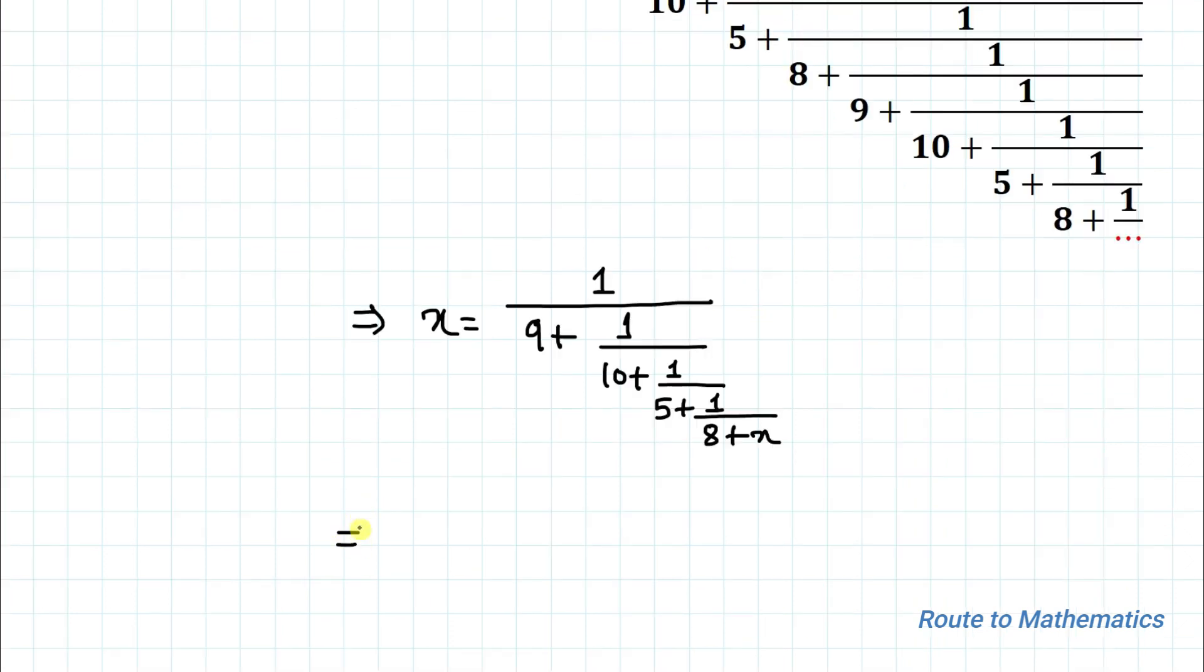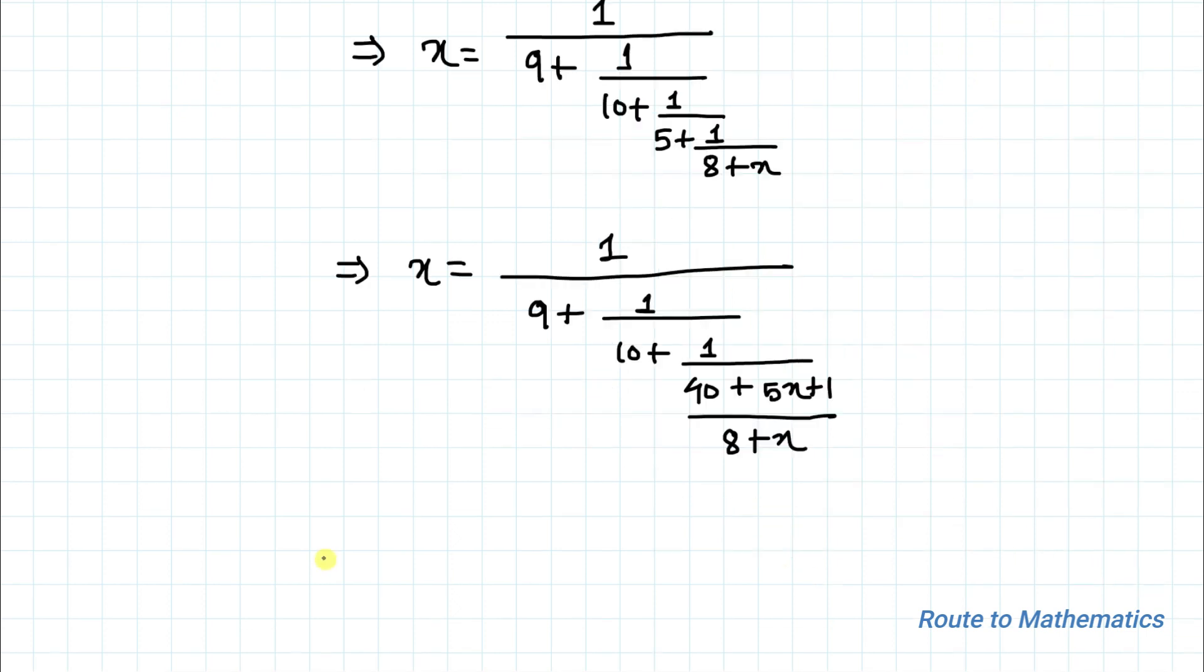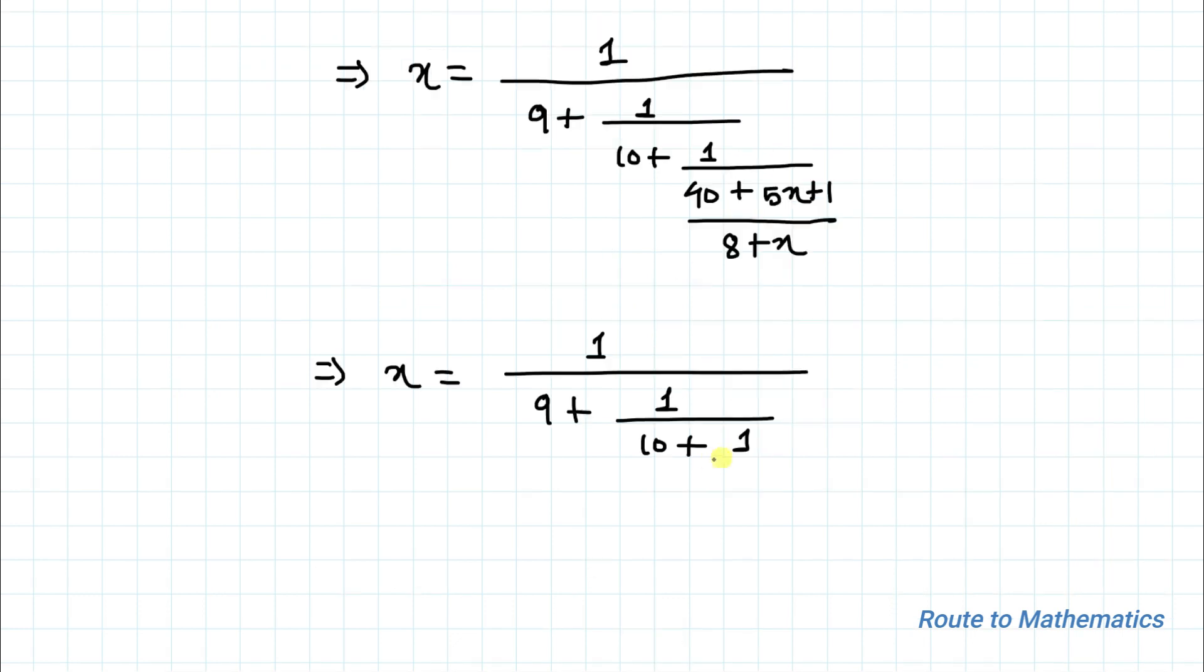In the next step, we have x equals to 1 by 9 plus 1 by 10 plus 1 by, let's just take LCM, so we have 40 plus 5x plus 1 divide by 8 plus x. This implies x equals to 1 divide by 9 plus 1 by 10 plus 1 by 41 plus 5x divide by 8 plus x.